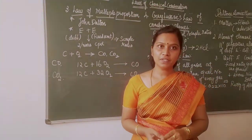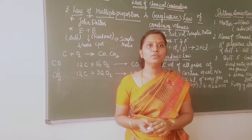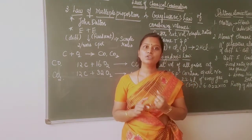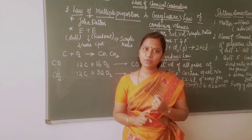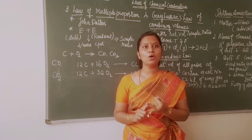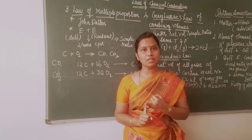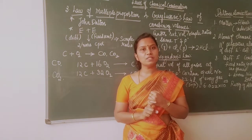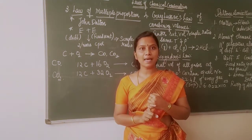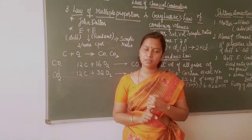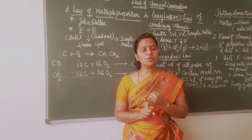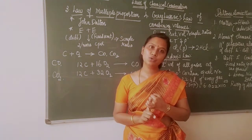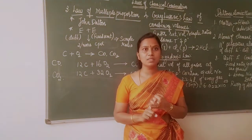Children, we have seen the first two laws of chemical combination. We saw the law of conservation of mass and the law of constant proportion. The law of conservation of mass was proposed by Anton Lavoisier, and the law of constant proportion was proposed by Joseph Proust.